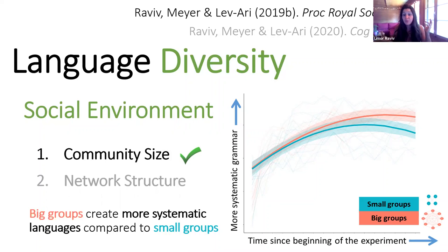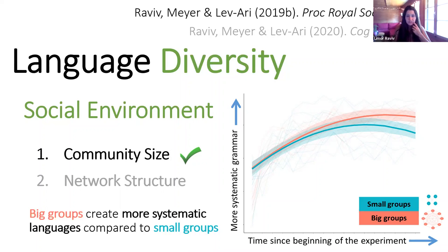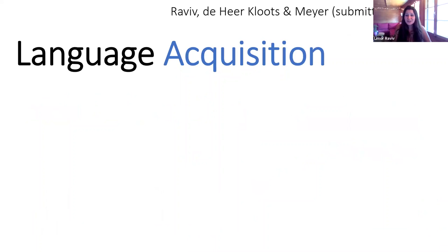People in larger communities have less shared history with each other and are exposed to more input variability. In a small group you could just remember each other's unique variations, but in a big community there are many more people to interact with, so there is a pressure to favor something simpler, more systematic, more grammatical — something that can ease convergence. Although convergence is harder in a big group, it's also much more necessary. Members of big communities are under pressure to create languages that are more generalizable and can help them communicate. These findings show that community size can really affect patterns of language diversity.